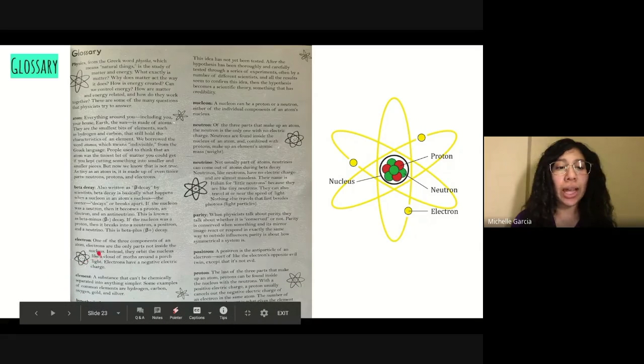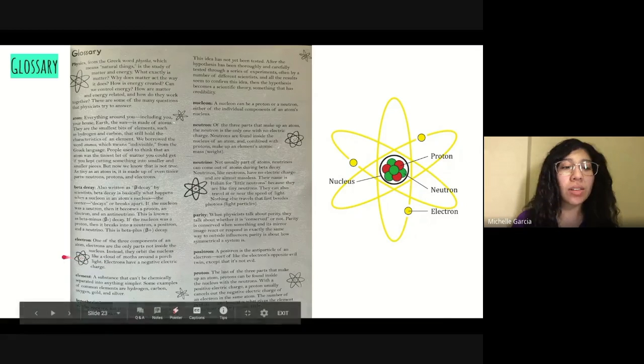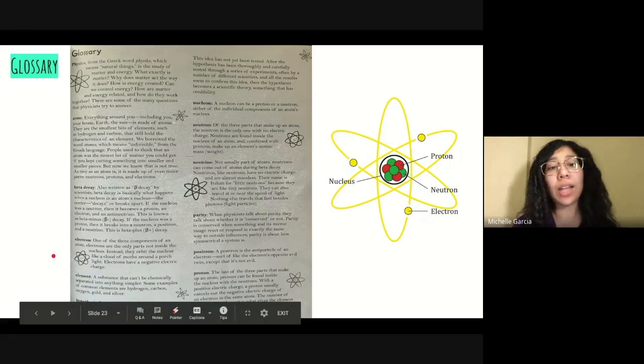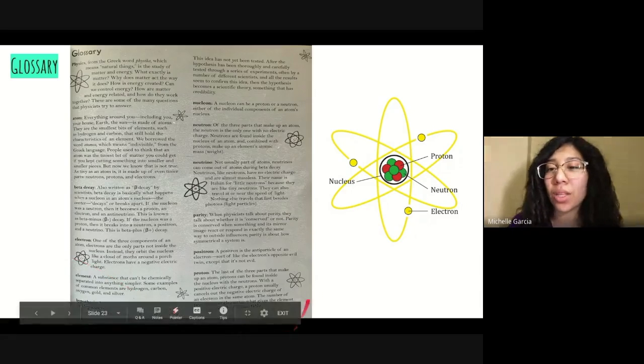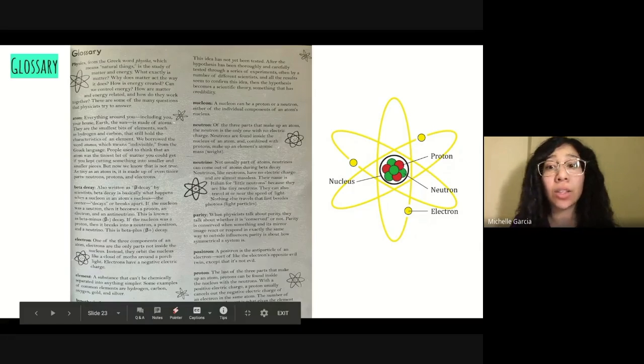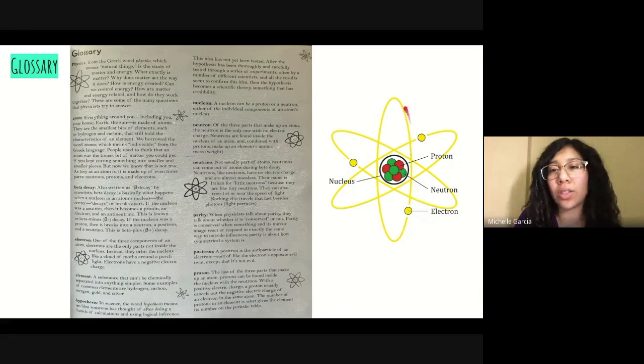Okay, now to electron over here. One of the three components of an atom, electrons are the only parts not inside the nucleus. Instead, they orbit the nucleus like a cloud of moths around a porch light. Electrons have a negative electric charge. So we had gone over protons, which are red here, and they live inside the nucleus. But then the electrons, which are the yellow circles, live outside of the nucleus. And they travel along this circular path right here.